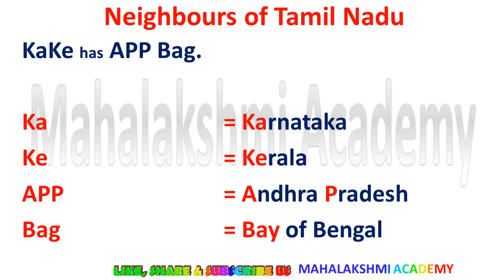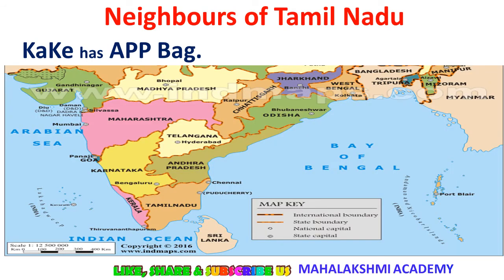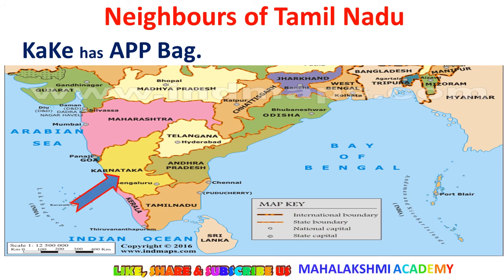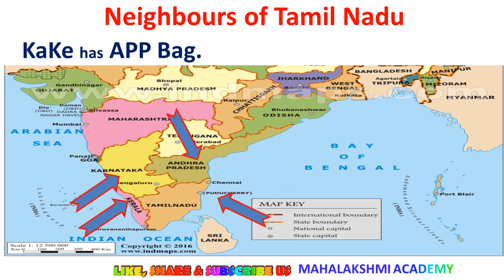Now let's move to the map. Tamil Nadu is in the south of India. Karnataka is sharing a boundary with Tamil Nadu, Kerala is also there, Andhra Pradesh, and the last one is the Bay of Bengal. These are the regions touching the boundaries of Tamil Nadu.